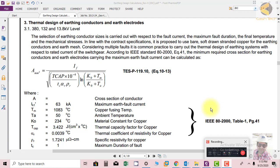Welcome friends, in this session we will study thermal design of earthing conductors and earthing electrodes. We have in our substation three voltage levels: 380, 132, and 3.8 kV. Selection of earthing conductors is carried out with respect to fault current. If the fault current is more, the conductor size will be bigger with a larger cross section so it can pass the fault current easily without